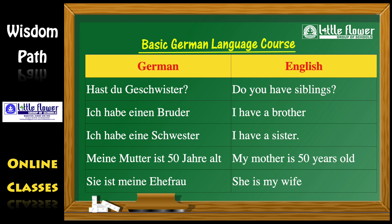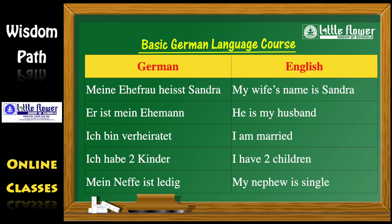Sie ist meine Ehefrau. — She is my wife. Meine Frau heißt Sandra. — My wife's name is Sandra. Er ist mein Ehemann. — He is my husband. Ich bin verheiratet. — I am married. Ich habe zwei Kinder. — I have two children. Mein Neffe ist ledig. — My nephew is single.